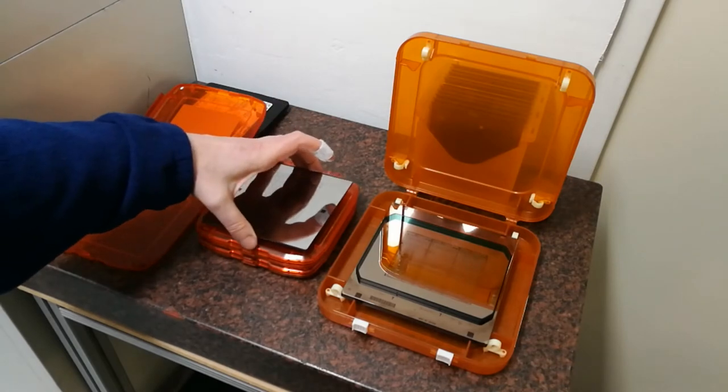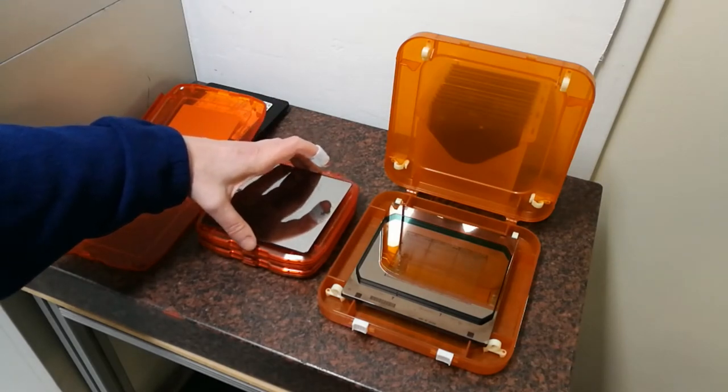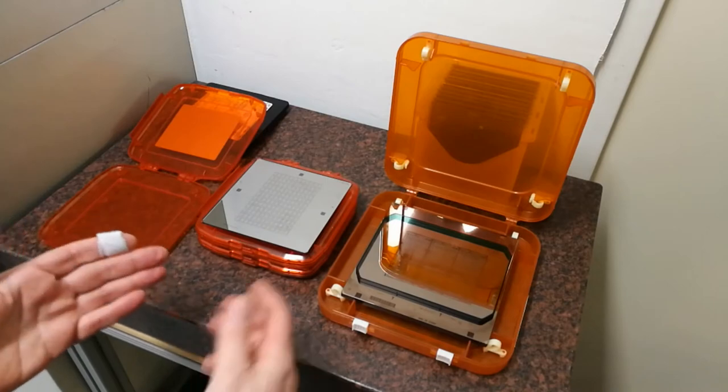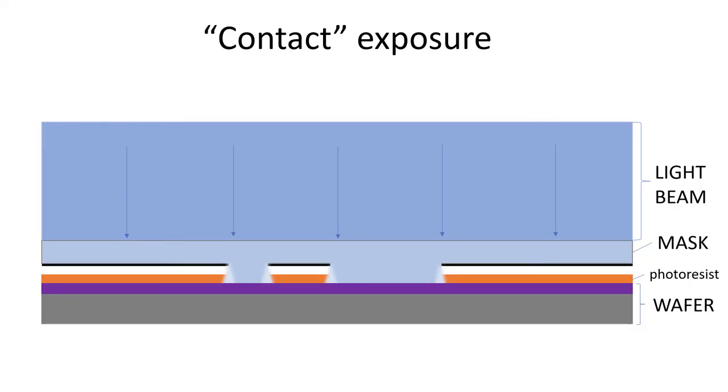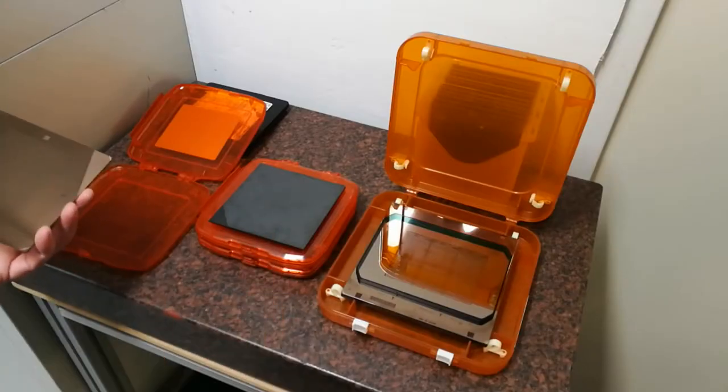You place the photomask on top of it, maybe align it first. And then you do a flood exposure from the top and transfer the pattern which is on the photomask in this way to the photosensitive layer on the wafer in a 1 to 1 ratio.